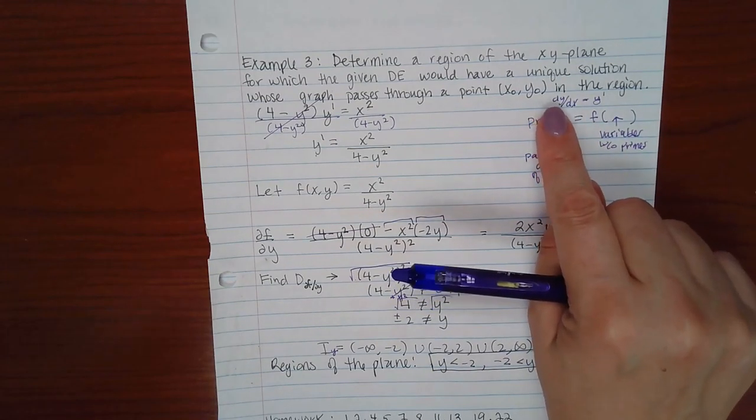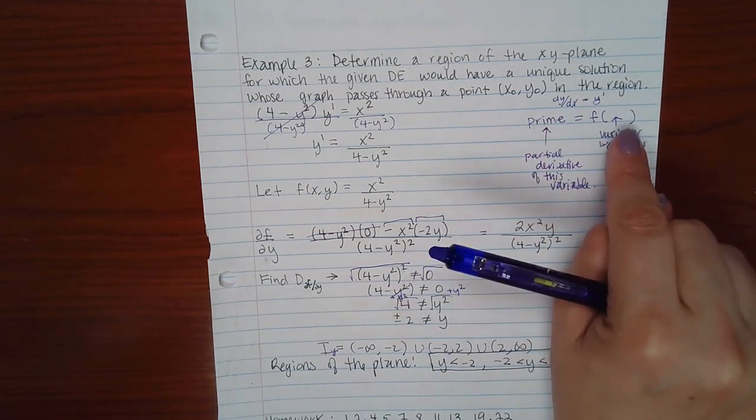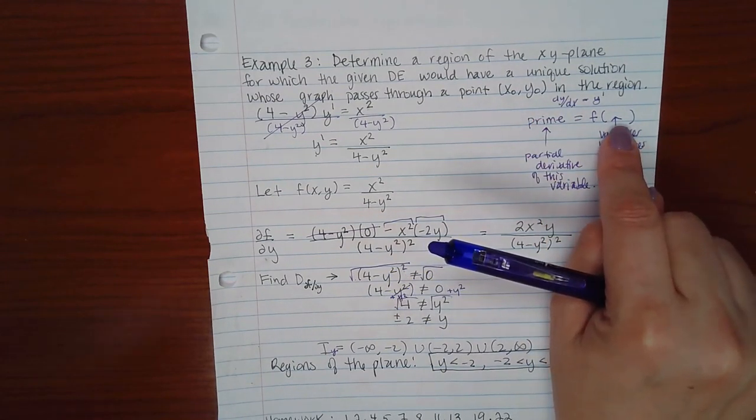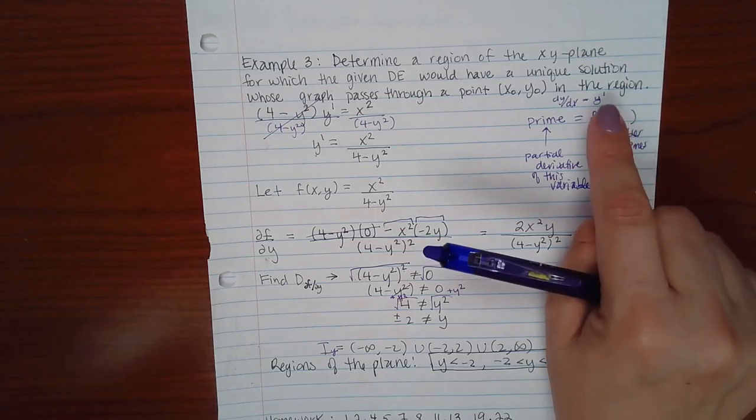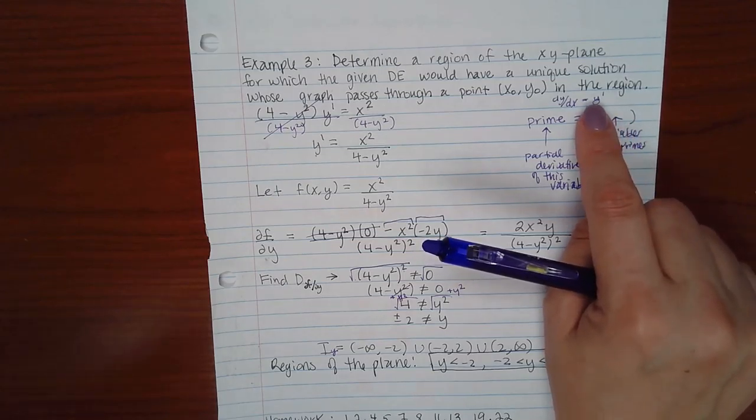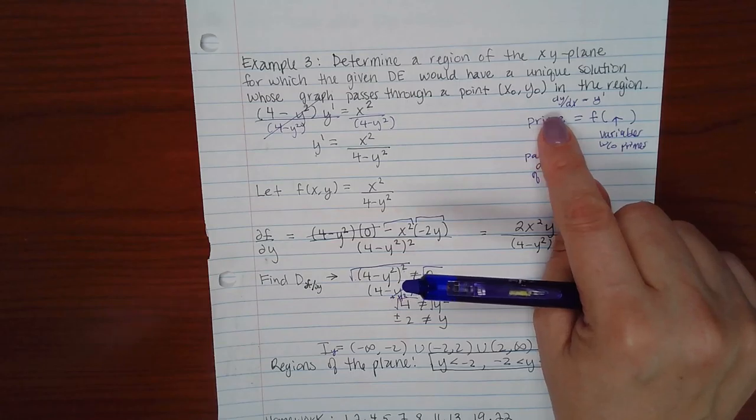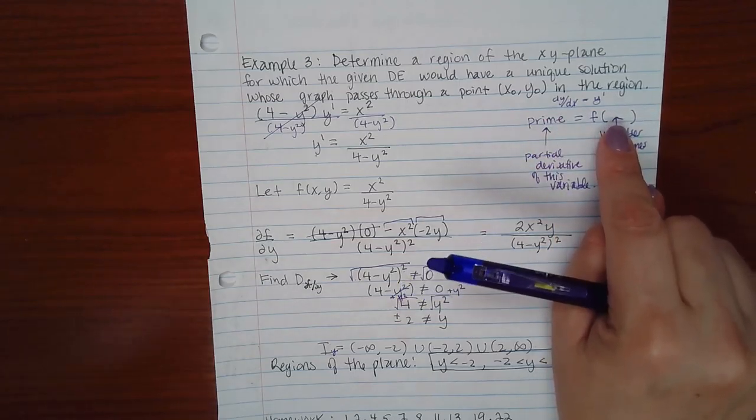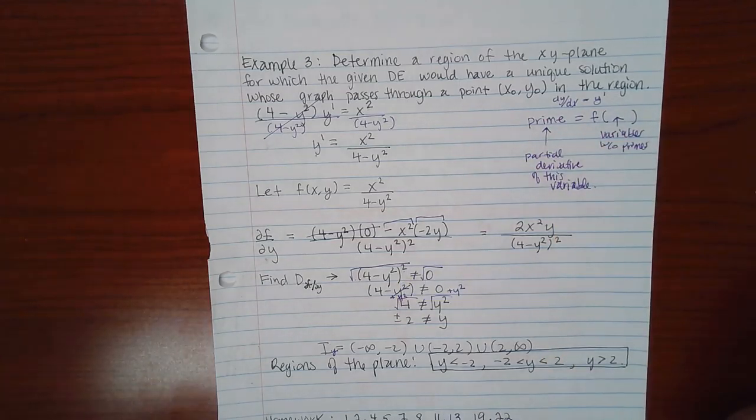So you want to get the DY DX on the left-hand side, and this will be the function you take the partial derivative of with respect to Y. Or if you have y prime in your DE, then get the y prime by itself, and whatever you end up with over here will be what you take the partial derivative of.